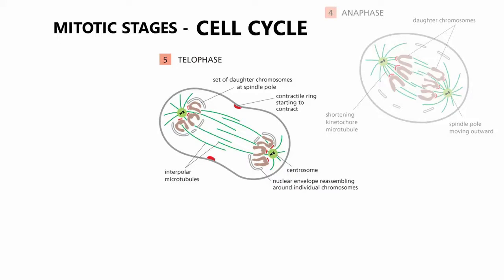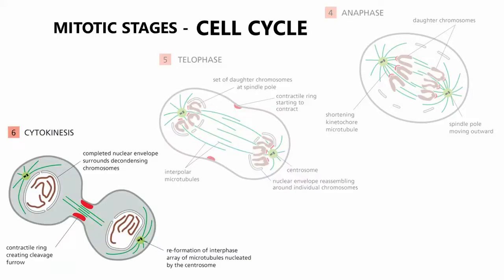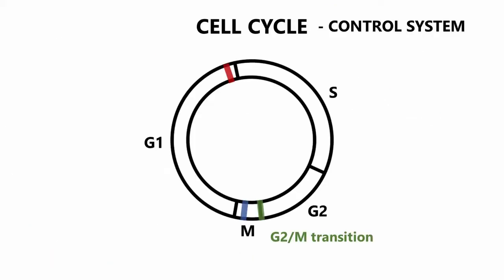During the telophase, the cytoplasm already begins with the contraction of the contractile ring. During cytokinesis, the cytoplasm is divided into two by the contractile ring and the daughter cells emerge.